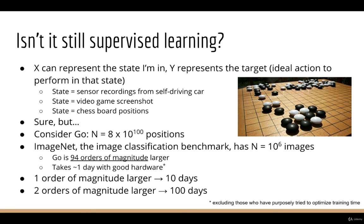Also keep in mind, there may not be such a thing as a correct action to take at all times. We don't want our AI to play the same way every single time — we want to allow for creativity and stochastic behavior. A supervised model, even if it were feasible to train, would only have one target per input, so it would never be able to do human-like things like generate poetry.